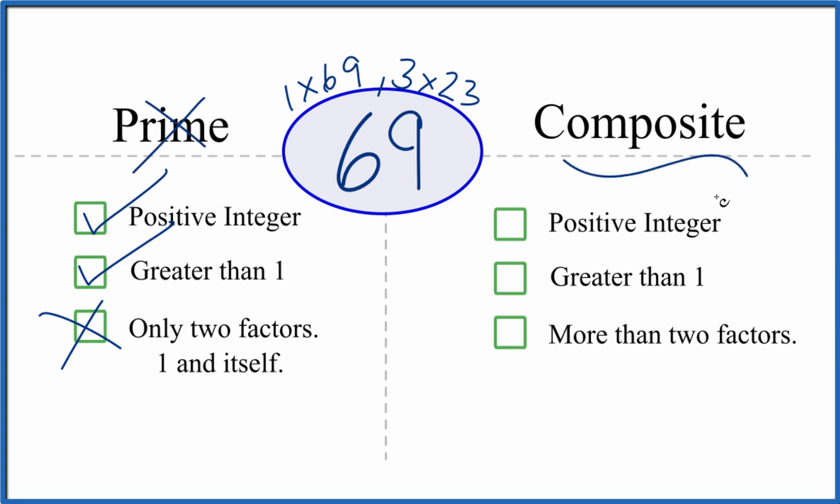But is it a composite number? It's a positive integer. It's greater than one. And as we said, there are more than two factors. So 69 is a composite number. This is Dr. B. Thanks for watching.